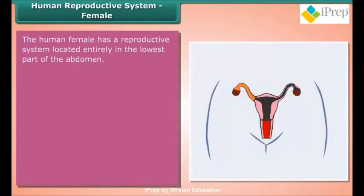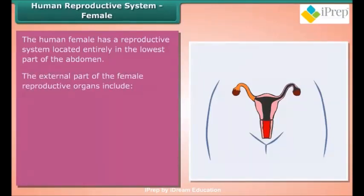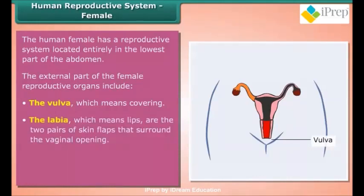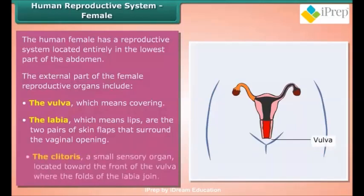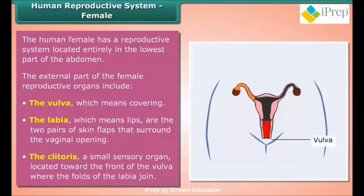Human Reproductive System – Female: The human female has a reproductive system located entirely in the lowest part of the abdomen. The external parts of the female reproductive organs include the vulva (meaning 'covering'), the labia (meaning 'lips'), which are two pairs of skin flaps that surround the vaginal opening, and the clitoris, a small sensory organ located toward the front of the vulva where the folds of the labia join.